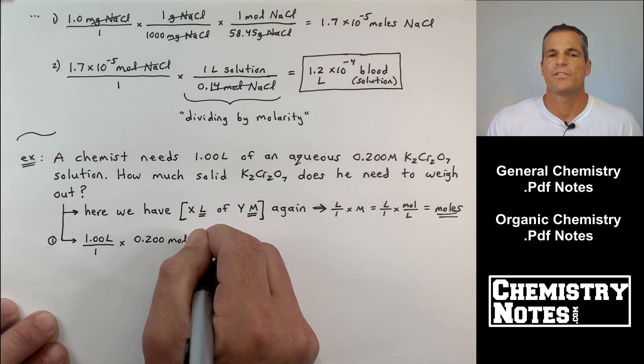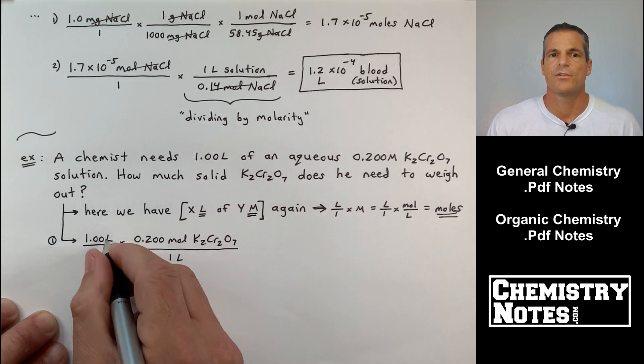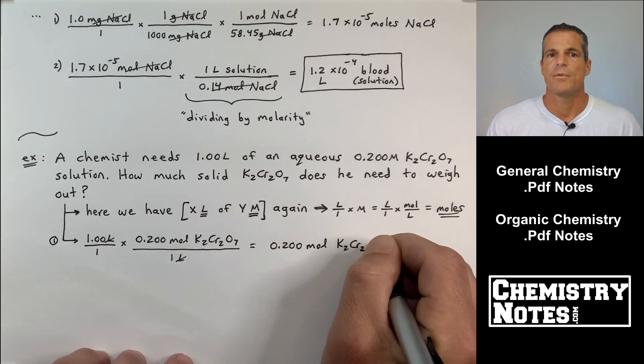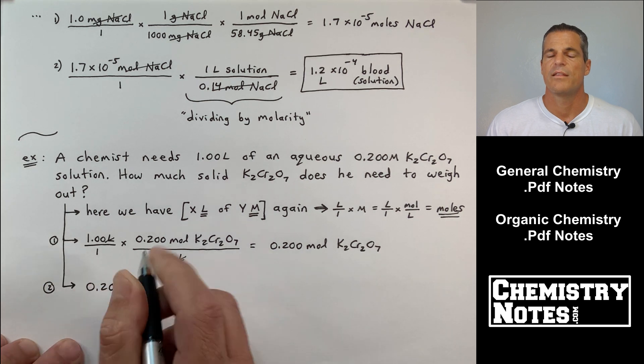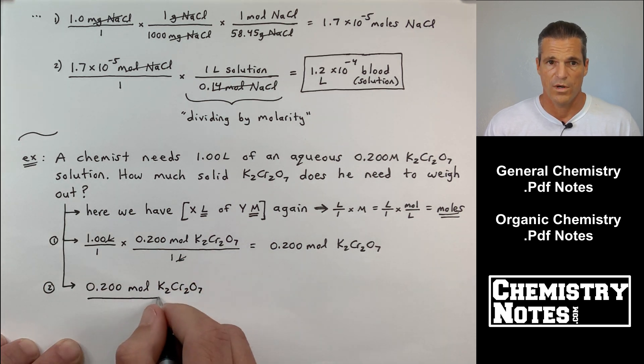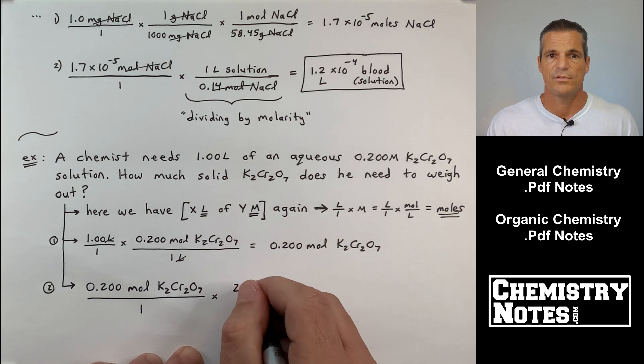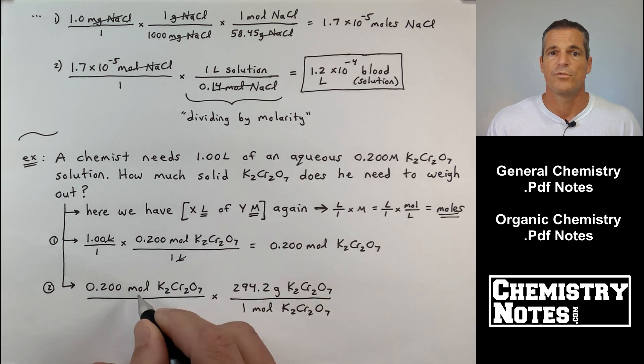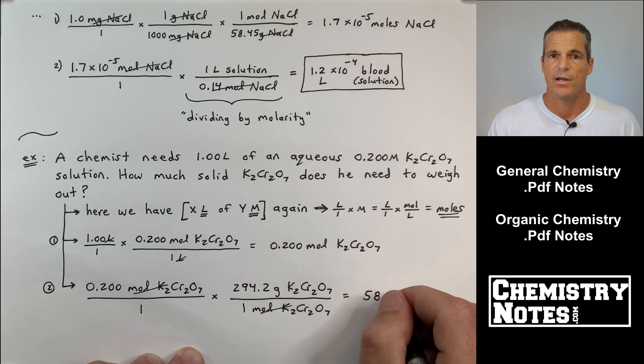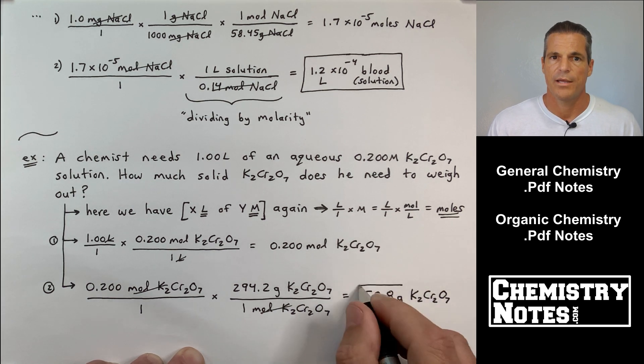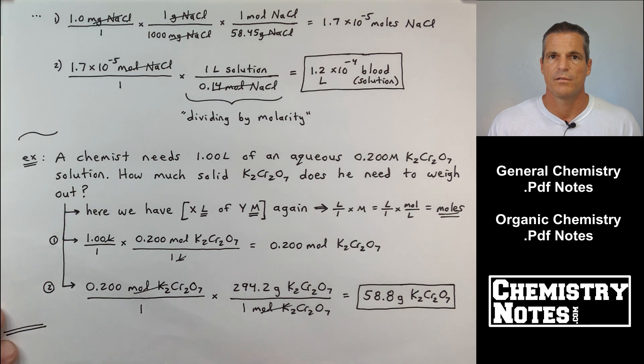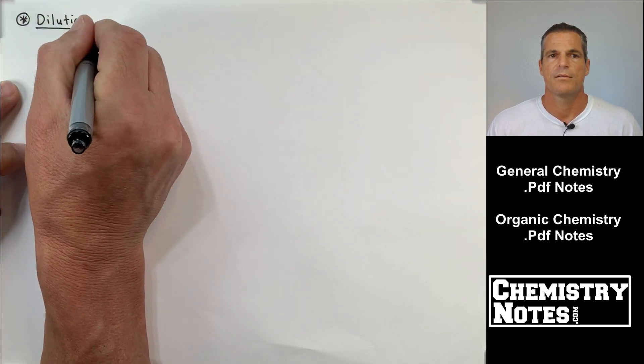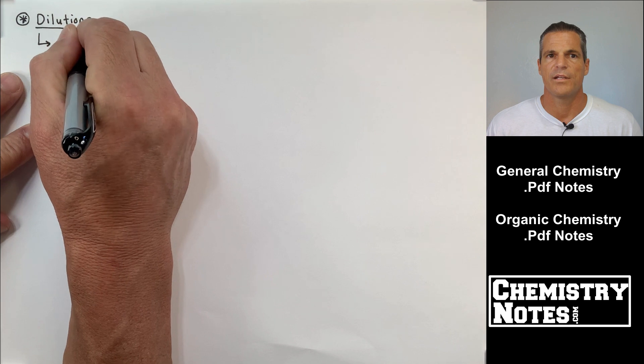So 1.00 liters times 0.200 moles K2Cr2O7 per liter gets me 0.200 moles of K2Cr2O7. That becomes my new, start with what I'm given, put it over one. So 0.200 moles K2Cr2O7, one mole on the bottom for every 294.2 grams. That's the molar mass. Add that up on the periodic table. I get 58.8 grams of K2Cr2O7. So that's, in general, that's basically all the types of molarity problems you'll see. So we've got plenty of experience on how to do the molarity calculations. And the last topic for today is dilutions.